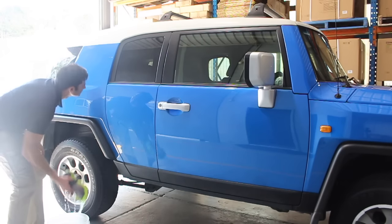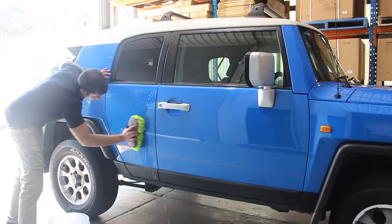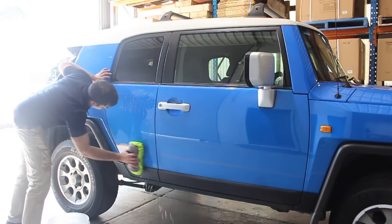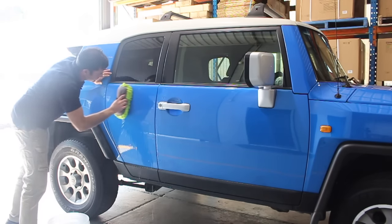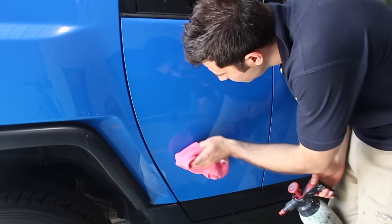The first thing I'm going to do is wash the panel that I'm working on, because we're going to use glue, and the glue will stick better to a clean surface. I've washed the panel, now I'm going to spray some wax and grease remover.